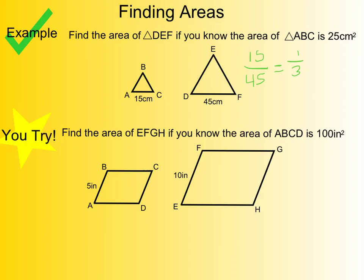Remember, for area we're going to square that. So my area ratio is 1 over 9. That's my smaller to larger ratio.